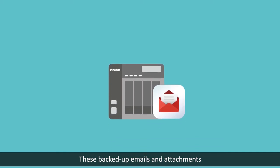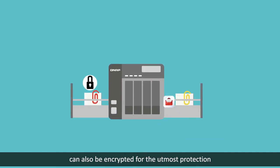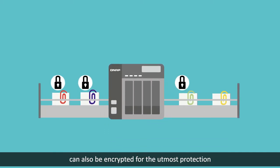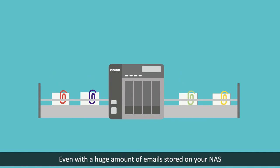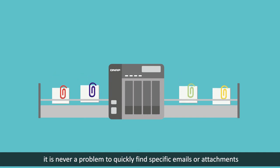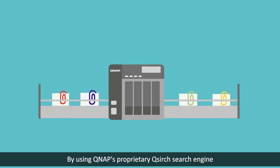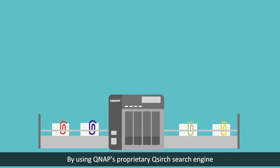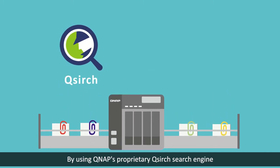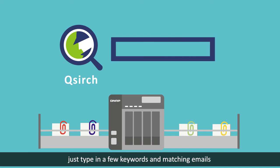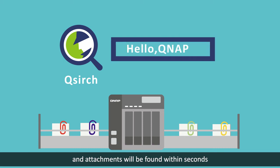These backed up emails and attachments can also be encrypted for the utmost protection. Even with a huge amount of emails stored on your NAS, it is never a problem to quickly find specific emails or attachments by using QNAP's proprietary QSearch search engine. Just type in a few keywords and matching emails and attachments will be found within seconds.